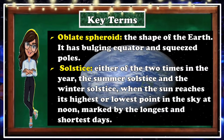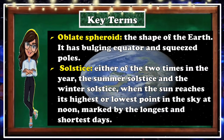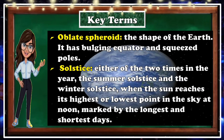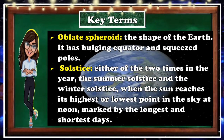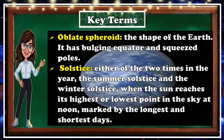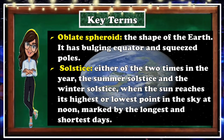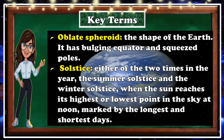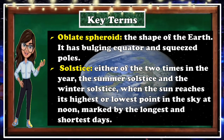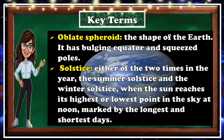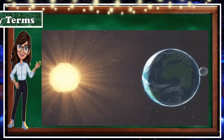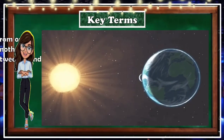First: oblate spheroid — it is the shape of the Earth, with a bulging equator and squeezed poles. Next: solstices — either of the two times in the year, the summer solstice and the winter solstice, when the sun reaches its highest or lowest points in the sky at noon, marked by the longest and shortest days.